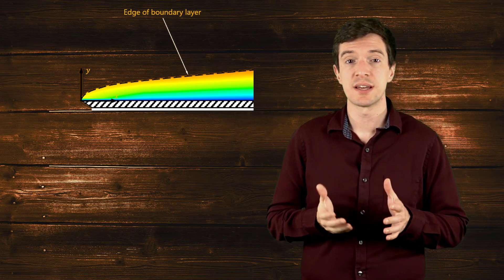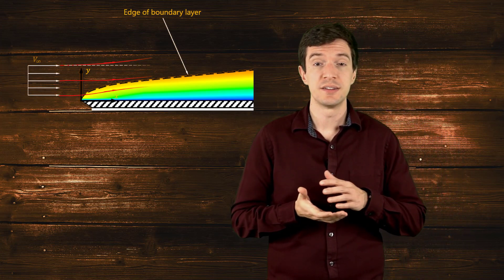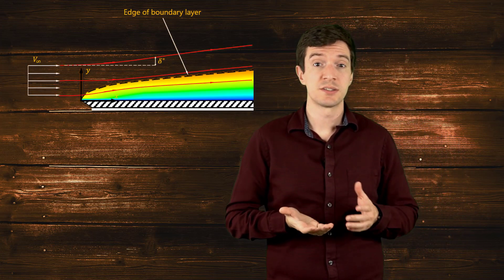The displacement thickness represents the distance through which streamlines outside of the boundary layer are displaced by the presence of the layer. It is a measure of blockage of external flow due to the formation of boundary layers. The same definition of the displacement thickness is used for turbulent boundary layers, where the velocity is taken in time averaged sense.